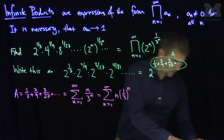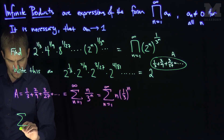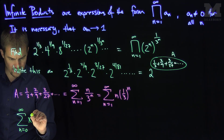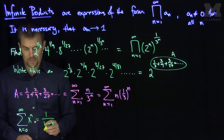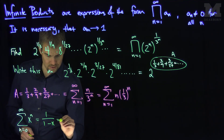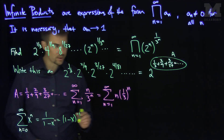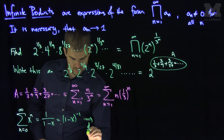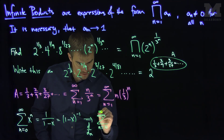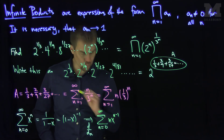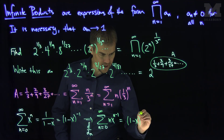Let me recall something from geometric series. We know that the sum as n goes from zero to infinity of x to the n, as long as the absolute value of x is less than one, converges to one over one minus x — the same as one minus x to the negative one. Now I'll take the derivative of this expression with respect to x. Differentiating, we get the sum as n goes from zero to infinity of n times x to the n minus one, equal to one minus x to the negative two.